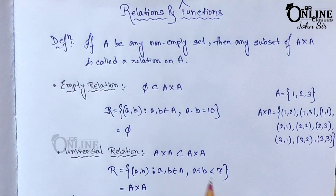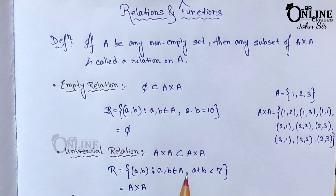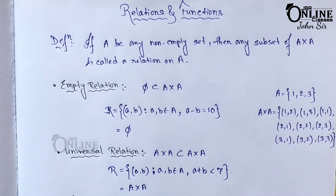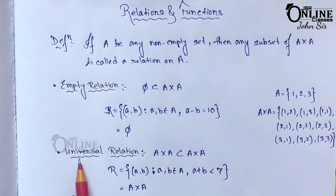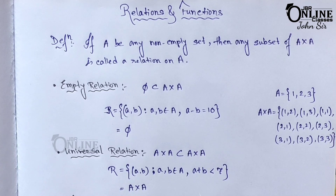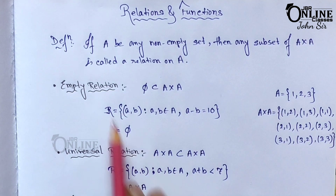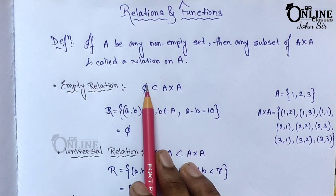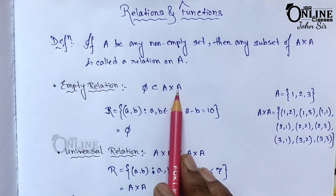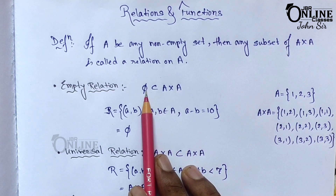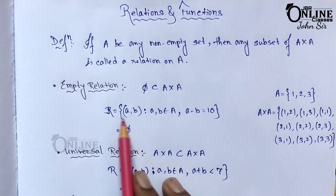Now there are particular relations on a set. The first one is the empty relation, the second one is the universal relation, and the third one is the identity relation. The empty relation is denoted like this: phi, which is a subset of A×A. Phi means the null set.